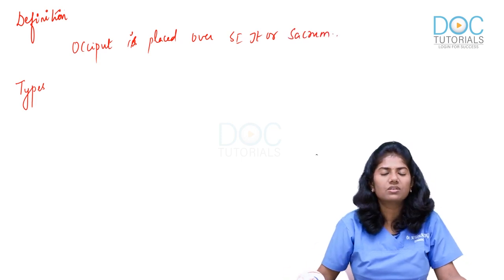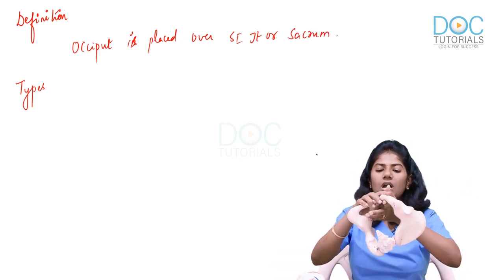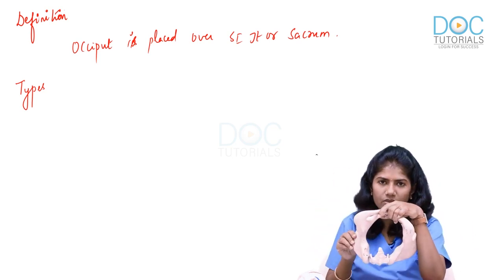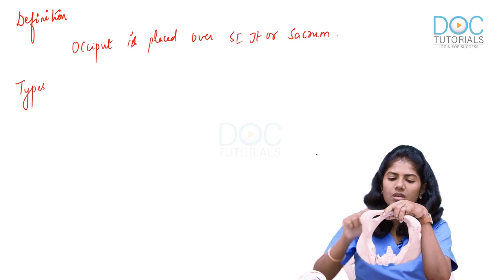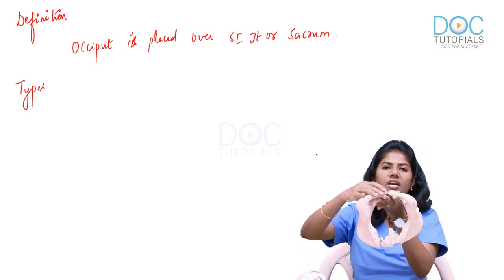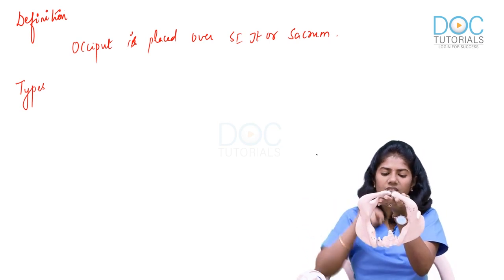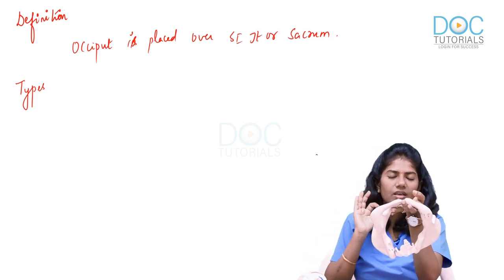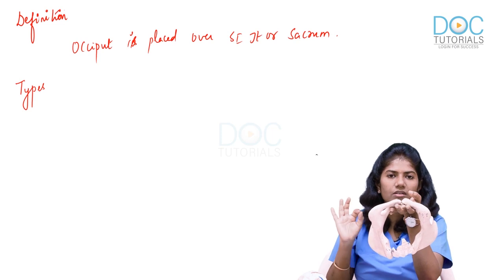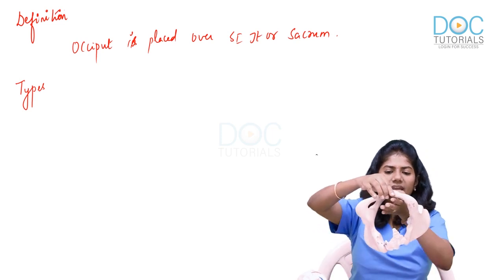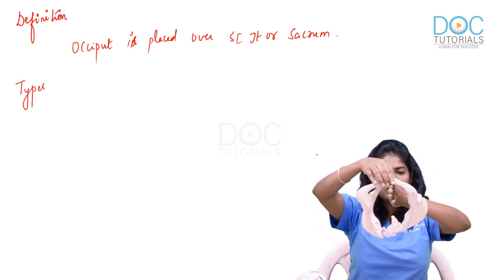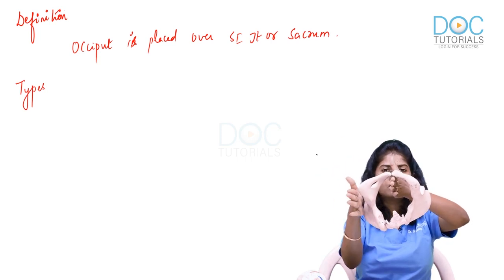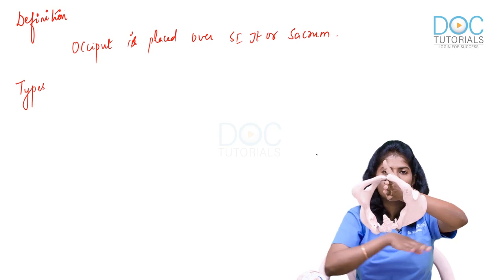This is the maternal pelvis. This is the pubic symphysis and this is the sacral promontory. We all know there are 8 different positions in a normal pelvis. This is the anterior quadrant, this is the posterior quadrant, this is the right transverse quadrant, and this is the left transverse quadrant.